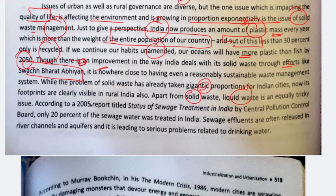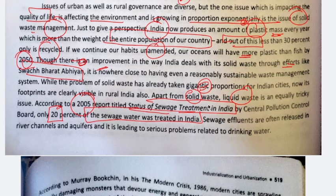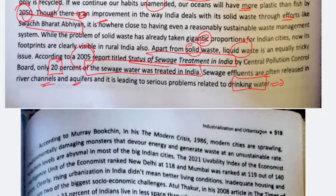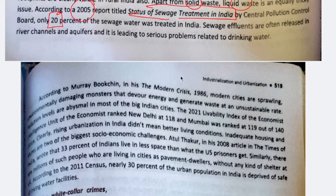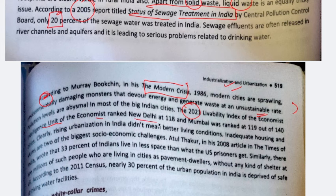Along with solid waste, liquid waste is equally tricky. According to a 2005 report titled 'Status of Sewage Treatment in India' by CPCB (Central Pollution Control Board), only 20% of sewage water was treated in India. The rest — liquid waste from industries — is released into river channels and aquifers, creating problems for drinking water. If you drink water contaminated by industrial waste, it can create serious health problems. Murray Bookchin wrote 'The Modern Crisis,' describing how waste is generated at an unsustainable rate and damages our environment. In the 2021 Livability Index of the Economist Intelligence Unit, New Delhi was ranked 118 and Mumbai 119 out of 140 cities, showing that rising urbanization has not improved living conditions.